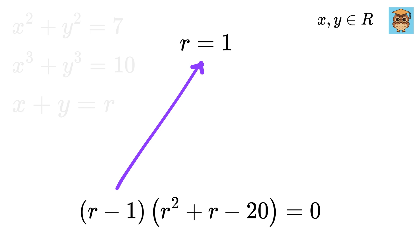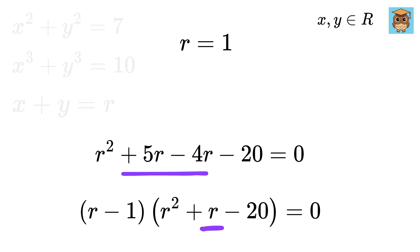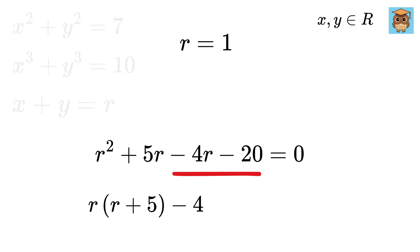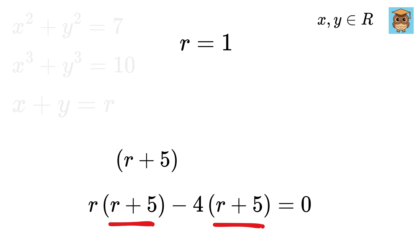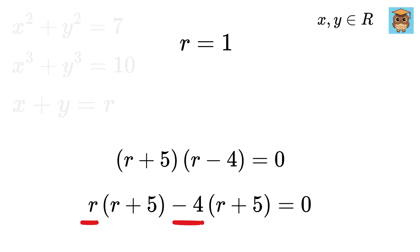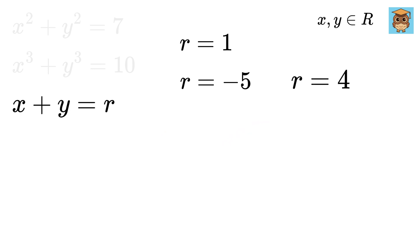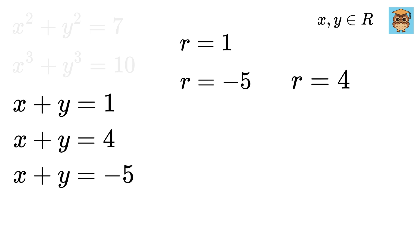Taking r minus 1 as common gives r minus 1 times r squared plus r minus 20 equals 0, so r equals 1. For the quadratic r squared plus r minus 20 equals 0, write r as plus 5r minus 4r, factor to get r plus 5 times r minus 4 equals 0, giving r equals minus 5 and r equals 4. So finally x plus y equals 1, 4, or minus 5.